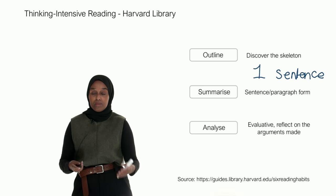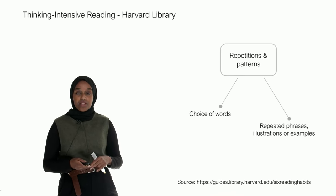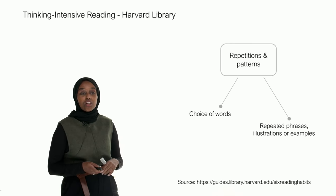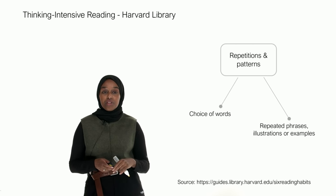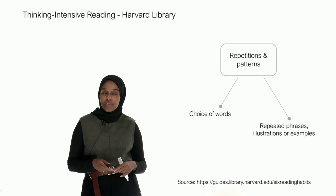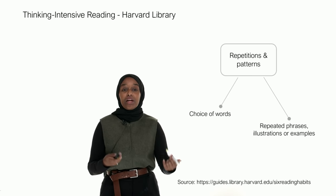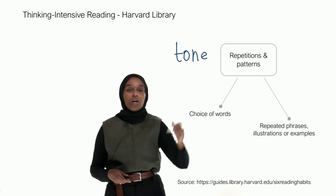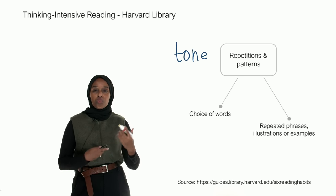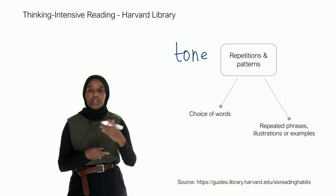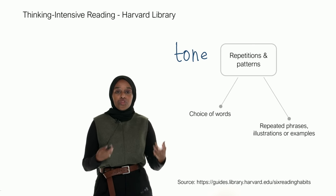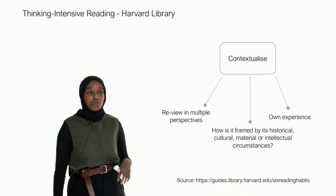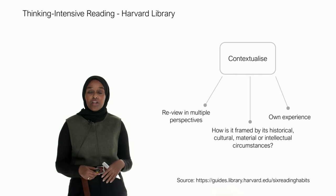The fourth technique is to look at repetitions and patterns. This includes the choice of words, repeated phrases, and illustrations or examples given. This gives you an idea of the tone of the text — what the author is trying to relay to readers and what the author finds important.